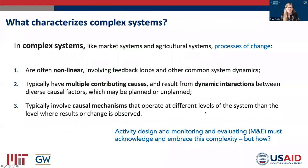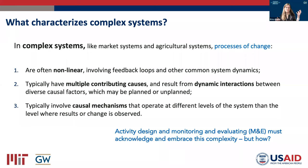What characterizes a complex system? From complexity science, we know a few things about how change happens in complex systems. Change is often non-linear — it involves feedback loops. Change usually has multiple causes, and those causes interact with one another to create that change. Importantly, those causal mechanisms may operate in a really different part of the system or at a different level than where we see the results. We need to figure out how to incorporate this complexity into activity design and monitoring and evaluation.